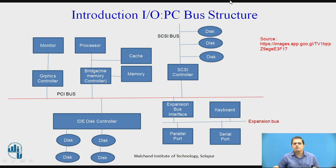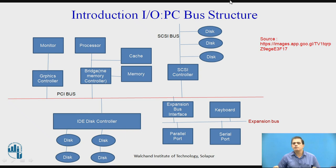Here we are having the SCSI controller. The full form of SCSI is Small Computer System Interface. With this particular SCSI controller, high-speed hard disks are connected. This particular SCSI controller will provide the SCSI bus, and with this SCSI bus the disk will remain connected. We are also having another kind of disk controller — the IDE disk controller, which stands for Integrated Device Electronics. With this particular IDE disk controller, we are having multiple disks connected.